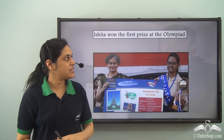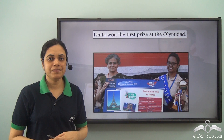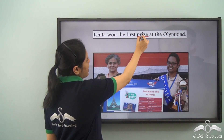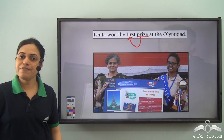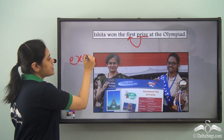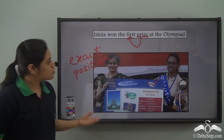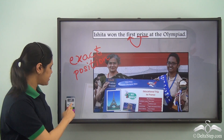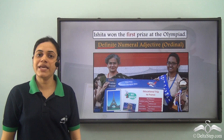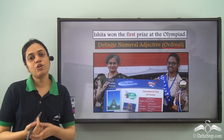'Ishita won the first prize at the Olympiad.' Point out the definite numeral adjective and tell its type. Prize is a noun and describing this noun is the adjective 'first.' This adjective tells us about the exact position of Ishita. So, it is a definite numeral adjective, ordinal — from 'exact' we know it is definite numeral adjective, and from 'position' we know it is of ordinal type.